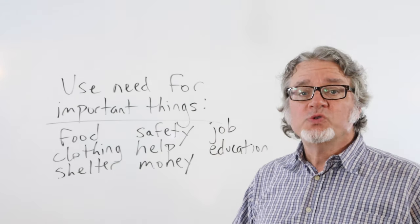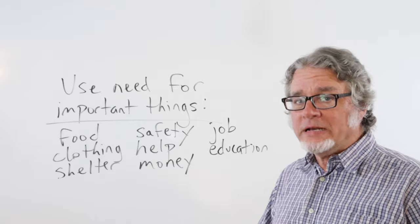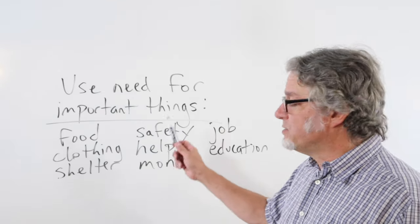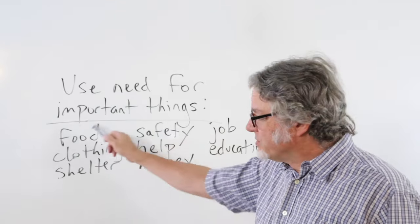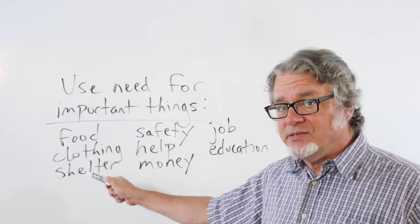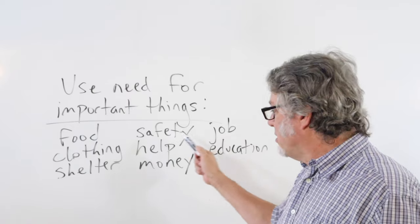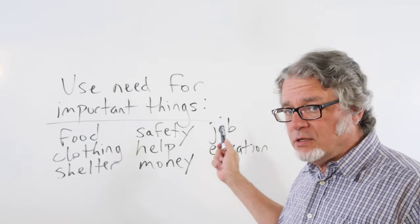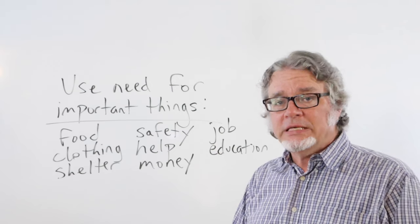We use the word need for things that are important or necessary such as food, clothing, shelter. These are the three primary needs or safety, help, money, a job, education. These are all things that you need.